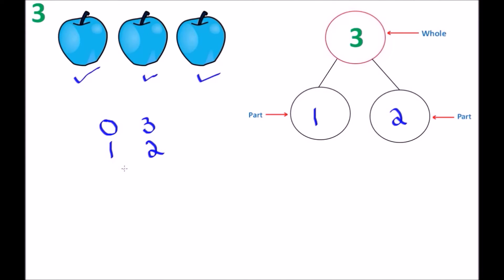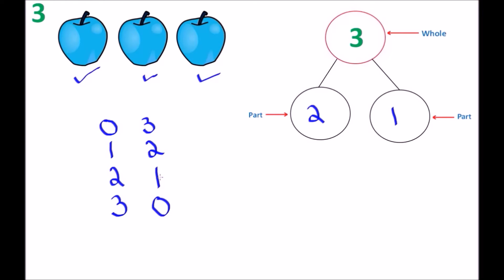Now if we have a one and a two, that means we can also have a two and a one. So let me erase what I had in there before and replace that with the new information. Our new number bond is a two and a one. And the last number bond we can make — we had a zero and a three — well, that means we can have a number bond that's a three and a zero. We just switched the numbers.